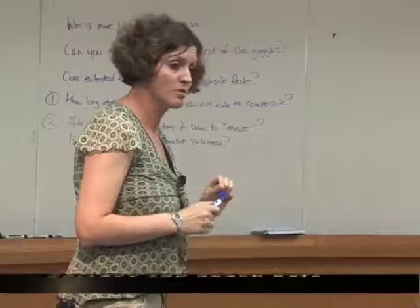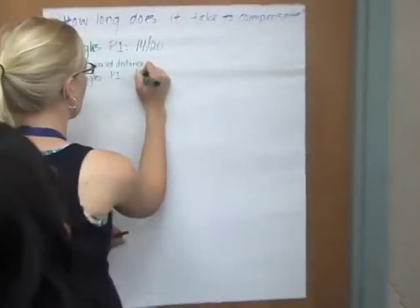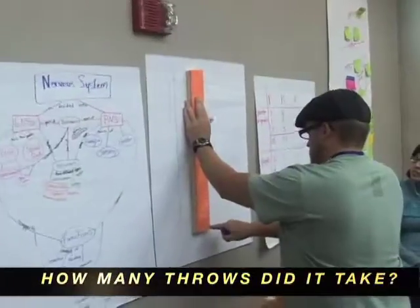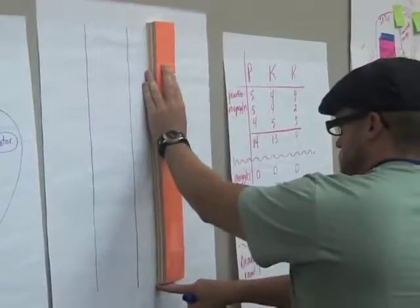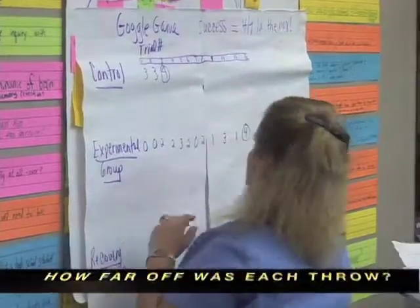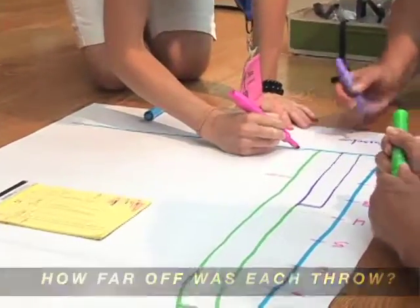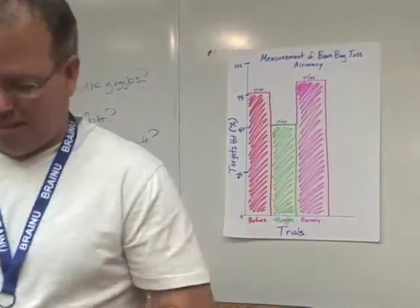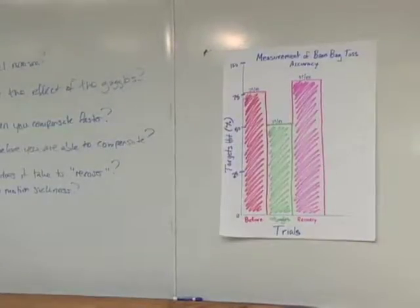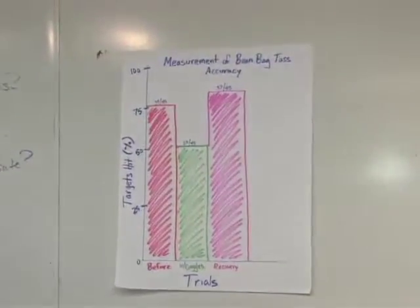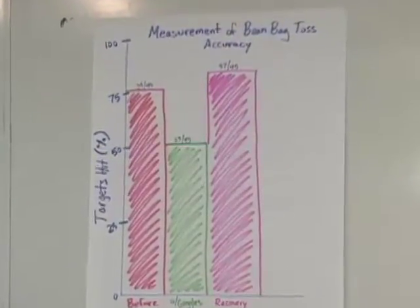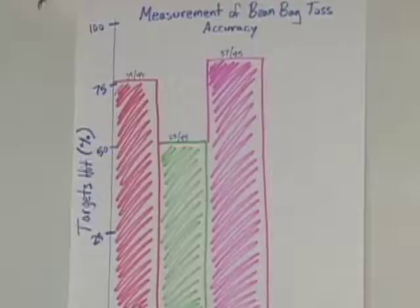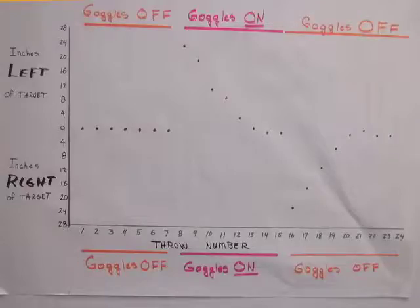I would like you to collect data with a specific task for today: how long does it take before you're able to compensate to do a task? And then I would like us to follow up — after we've compensated for the goggles, if we take them off, how long will it take us to go back to normal? By combining all of the data together in each condition, the effect of the goggles can be seen. This graph tracks how accurate each throw was, so you can see the learning and unlearning progression with the goggles on and off.